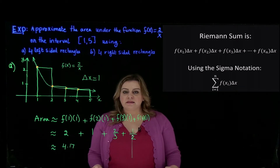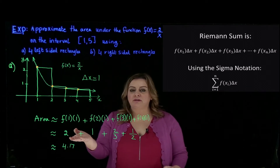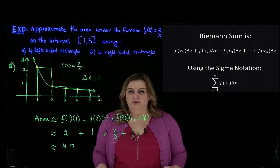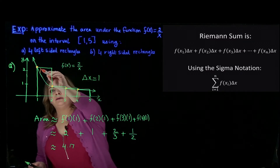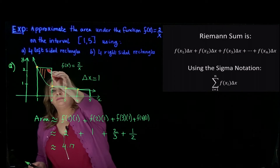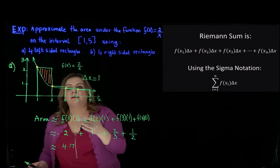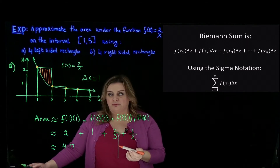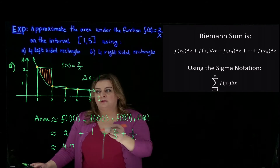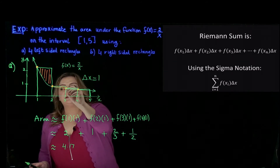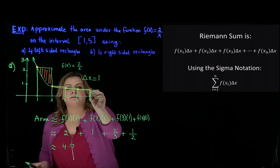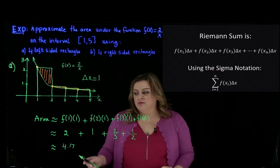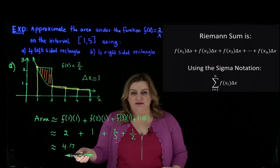Notice this approximation is an overestimate of the area because we accounted for the part of each rectangle that is above our curve. The same applies to each rectangle — the left-sided rectangles extend above the curve, so this is an overestimate of the area.